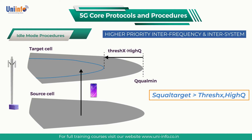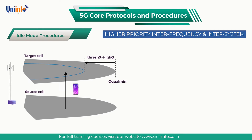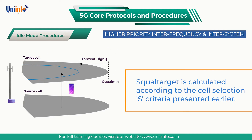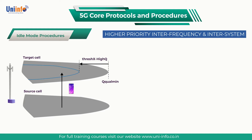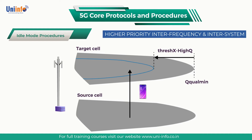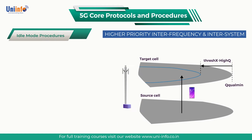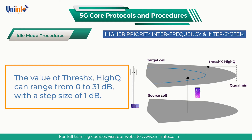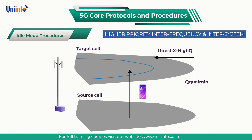S-Quality target is greater than threshold high quality. S-Quality target is calculated according to the cell selection S criteria presented earlier. SIB4 broadcasts threshold high quality for inter-frequency neighbors whereas SIB5 broadcasts threshold high quality for LTE inter-system neighbors. The value of threshold high quality can range from 0 to 31 dB with a step size of 1 dB. Ignoring the impact of any offsets, threshold high quality defines a margin relative to Q quality minimum as shown in the figure.